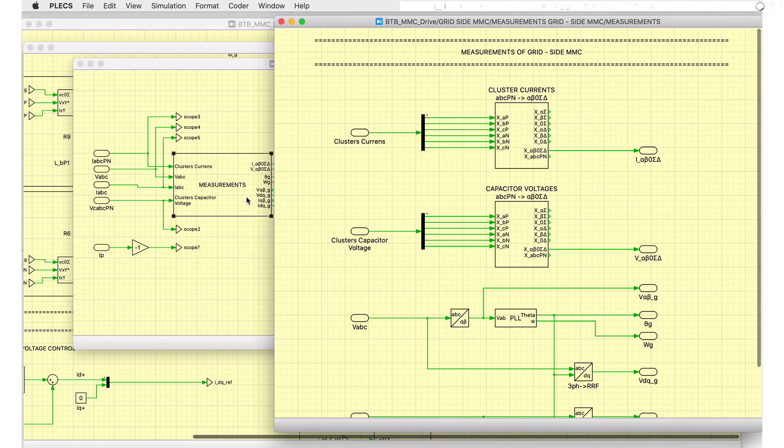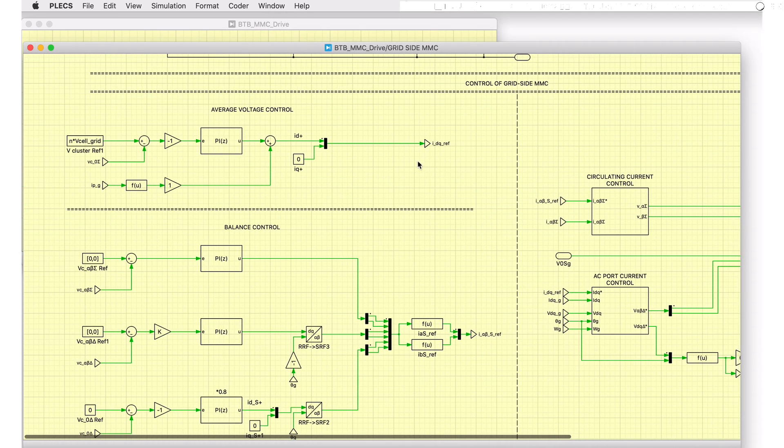In this model, a decoupled DQ vector control system model is used. The converter signals are transformed using six-dimensional transformation to alpha, beta, and zero sigma, and alpha, beta, and zero delta values for improving the dynamic performance of the system control loops.